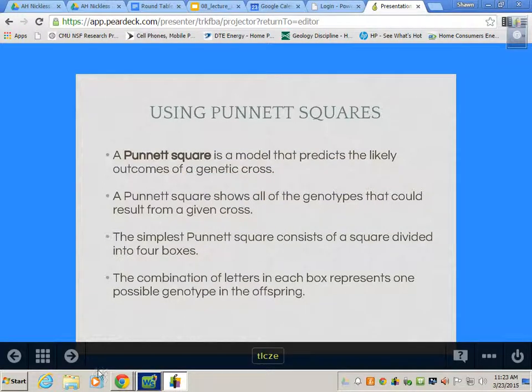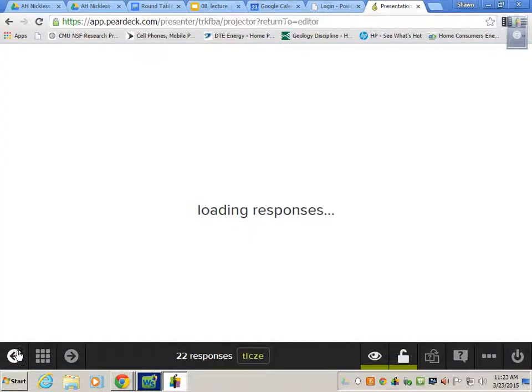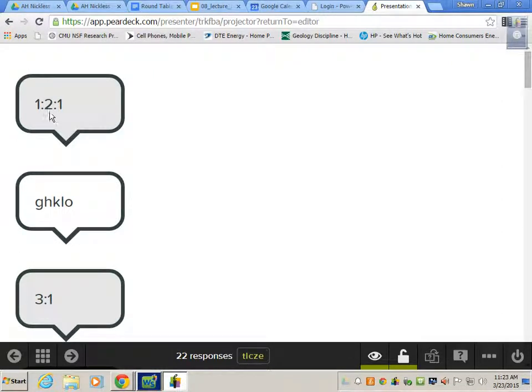I did ask you guys what the probability of two heterozygous individuals crossing is. The ratio is 1 to 2 to 1. The phenotypic ratio is 3 to 1.